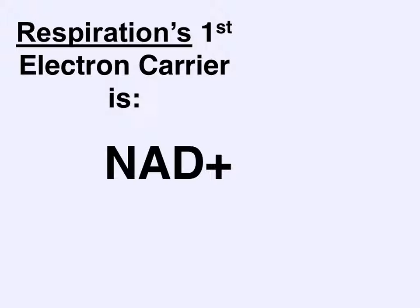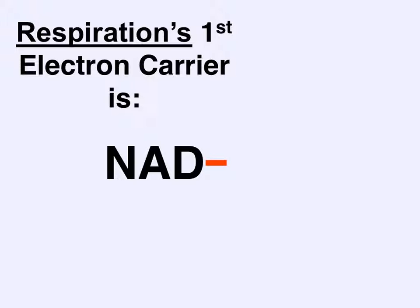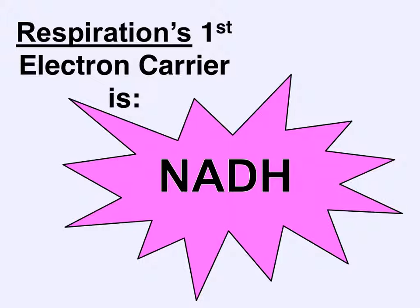When learning about photosynthesis, we talked about the electron carrier NADP+. Respiration is not photosynthesis, so it actually uses different electron carriers. The first electron carrier used in cellular respiration is NAD+ — there's no P in this one. Because it's still an electron carrier, it has the capacity to carry two high-energy electrons. The first electron takes the positive NAD+ and makes it neutral; the second electron changes it to NAD negative. Now that NAD is negative, it's very attracted to positive hydrogen ions. The positively charged hydrogen joins with NAD negative to form the high-power, full-energy electron carrier called NADH. Remember, NADH is not NADPH, but it does the same job: carrying electrons and hydrogen.